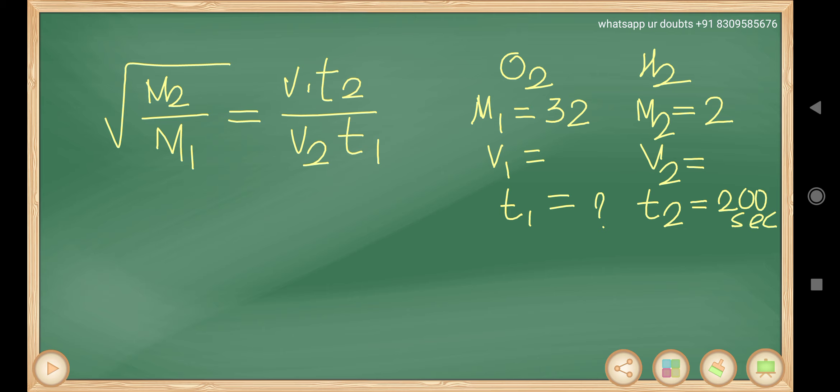So for oxygen, 32 grams means 1 mole. For hydrogen, 4 grams means 2 moles. So I am taking volume as 1 for oxygen, volume as 2 for hydrogen. In place of volume, you can safely keep N1 and N2. The meaning is the same.